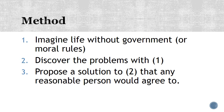For step three, you propose a solution to the problems that arise without some sort of government or moral code — a solution that any reasonable person would agree to. That solution is, in effect, the social contract. It's the thing that everybody would mutually agree upon if they were being at all reasonable.